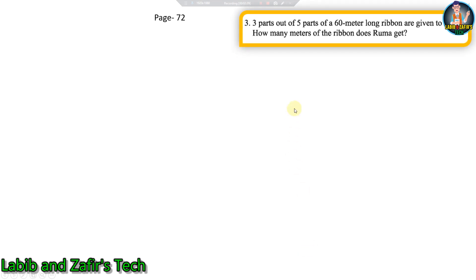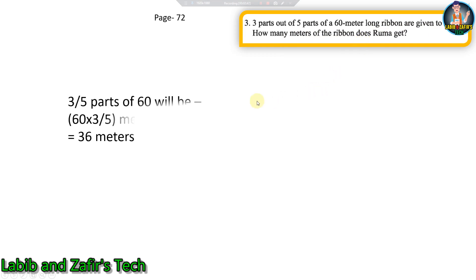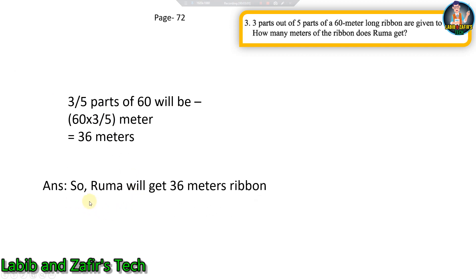Third word problem: three parts out of five parts of a 60-meter long ribbon are given to Ruma. How many meters of ribbon does Ruma get? Three-fifths of 60 meters: multiply 60 by 3 to get 180, then divide 180 by 5 to get 36 meters. So Ruma will get 36 meters of ribbon.